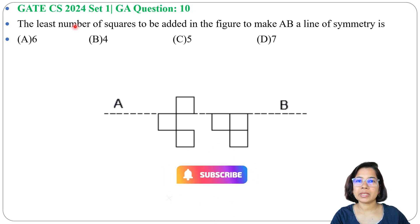Let's solve one previous question of general aptitude. This question was asked in GATE CS 2024 Set 1, GA question number 10. The least number of squares to be added in the figure to make AB a line of symmetry is...